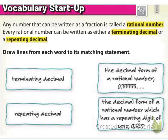Draw lines from each word to its matching statement. We have terminating decimal and repeating decimal — the decimal form of a rational number 0.3333... and the decimal form of a rational number which has a repeating digit of 0, which would be 0.625 with repeating zeros after that. Draw your lines to connect those two and see which one you think goes with what.